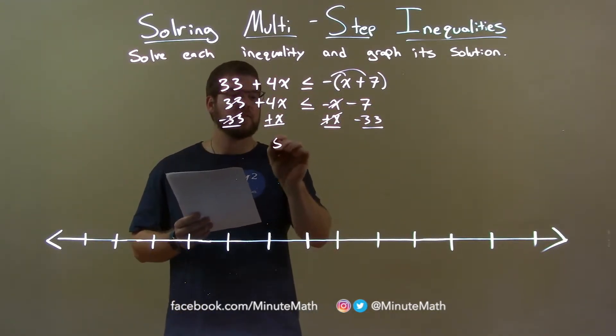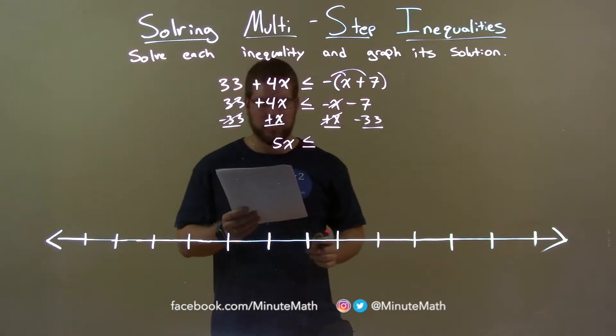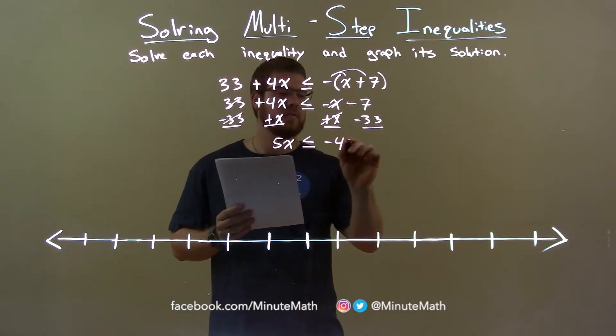4x plus x is 5x, so less than or equal to, and negative 7 minus 33 is negative 40.